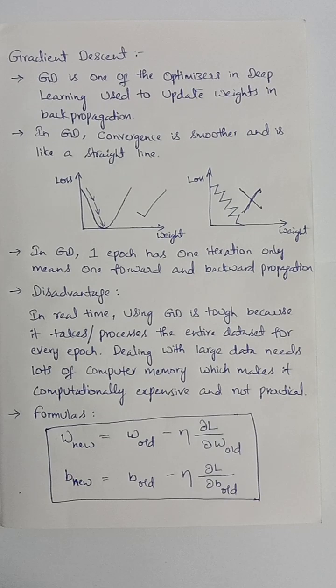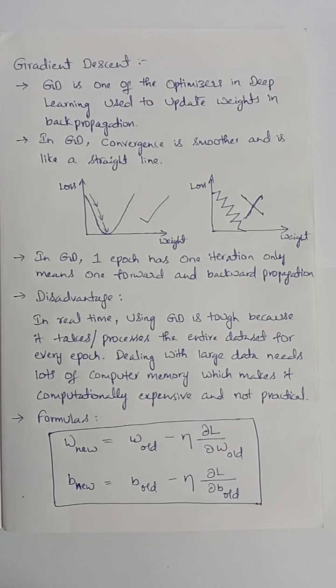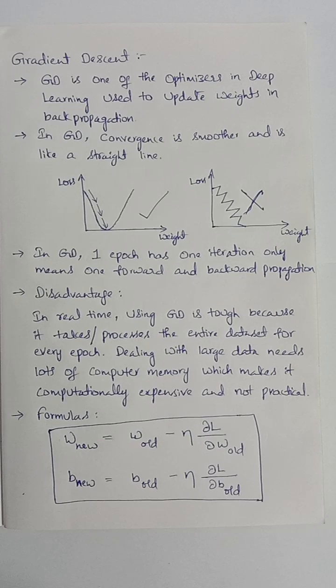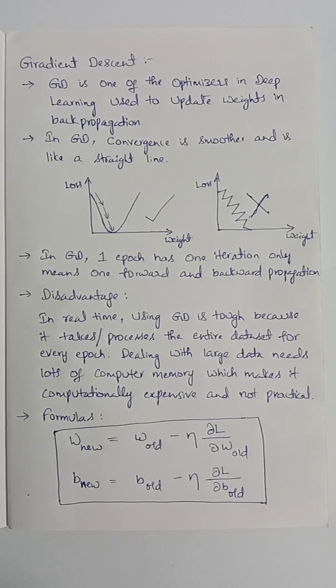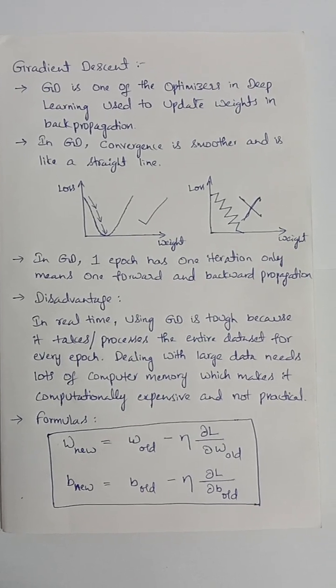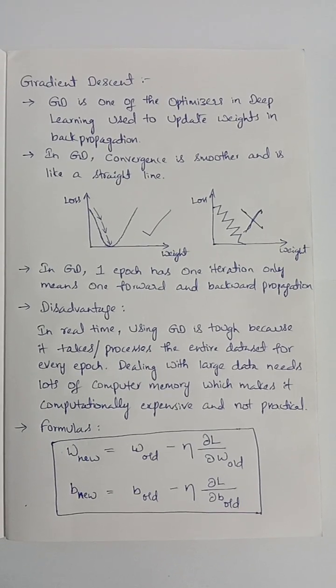using gradient descent is tough because it takes the entire dataset for every epoch. So, dealing with large data needs lots of computer memory, which makes it computationally expensive and not practical. Formulas of gradient descent: